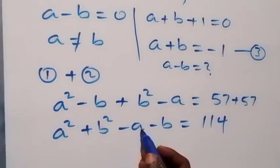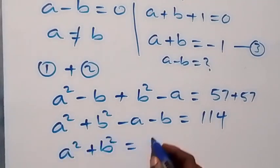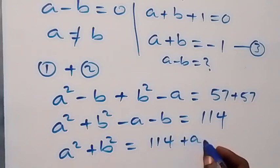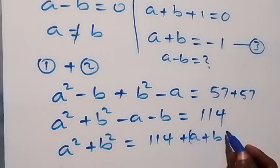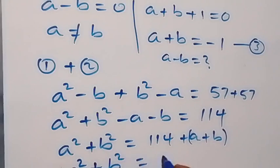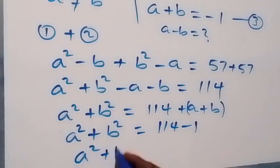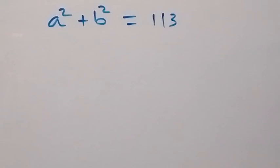Let's take a and b to the other side. That implies a squared plus b squared equals 114 plus a plus b. And we already have the value of a plus b from equation 3, which is minus 1. So we have a squared plus b squared equals 114 minus 1, which equals 113.